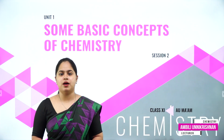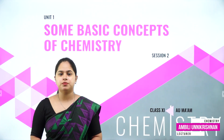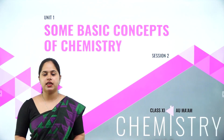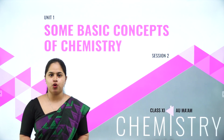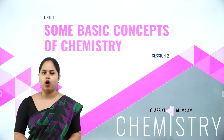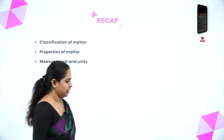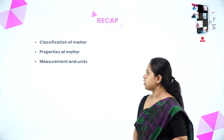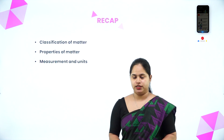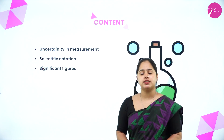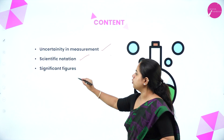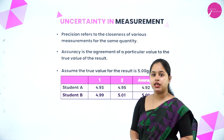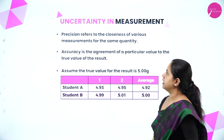Good morning everyone. This is Ampli Unnikrishnan from the Department of Chemistry, Vidyashram School of Excellence, Mysore. Today we are beginning with Session 2 of your chapter, 'Some Basic Concepts of Chemistry.' In the last class we discussed classification of matter, properties of matter, measurement and their units. In today's class we will be discussing uncertainty in measurement, scientific notation, and significant figures.